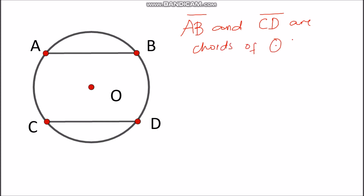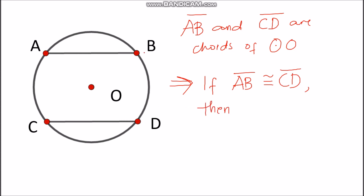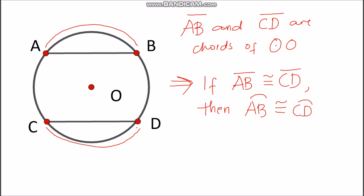If chord AB is congruent with chord CD, then according to Theorem 111, the corresponding arcs are also congruent. So arc AB is congruent with arc CD. These are the arcs — arc AB and arc CD — and this holds because the chords are congruent.